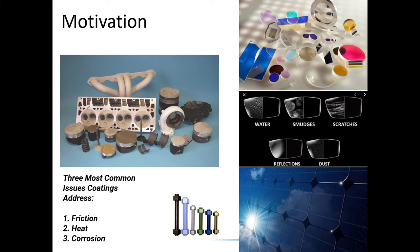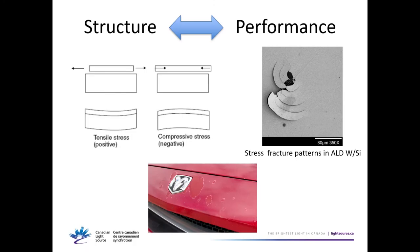Thin films are everywhere, and one of the most common issues they address are friction, heat, and corrosion. They are there to protect and extend the life of a particular beam in a bridge. So yes, they are very important, and we need to know their structural properties to avoid cracking or peeling off our cars.